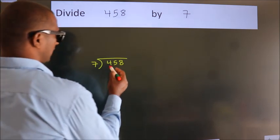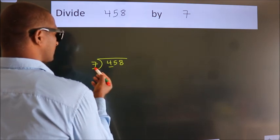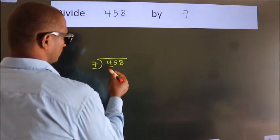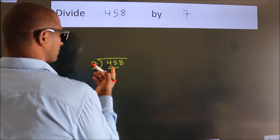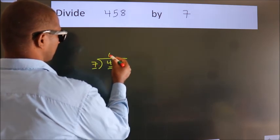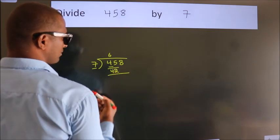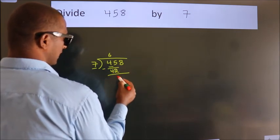4 is smaller than 7, so we should take two numbers: 45. A number close to 45 in the 7 table is 7×6=42. Now we should subtract. We get 3.